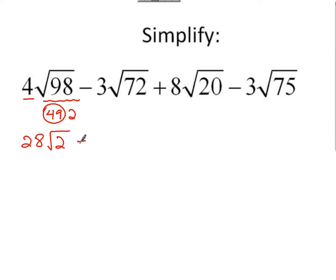We're subtracting 3 root 72, so I'm thinking of the largest perfect square that goes into 72, which is 36. So this is 36 times 2. I'm taking the square root of 36, which is 6. I'm multiplying it to the 3 in front, getting 18. So 2 remains underneath the root. We're subtracting 18 root 2 there.